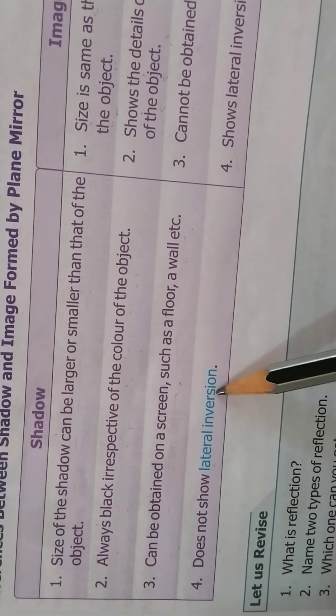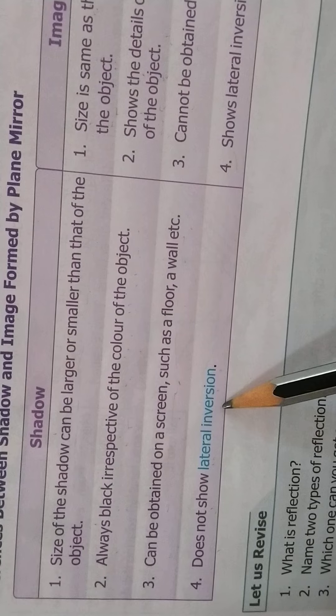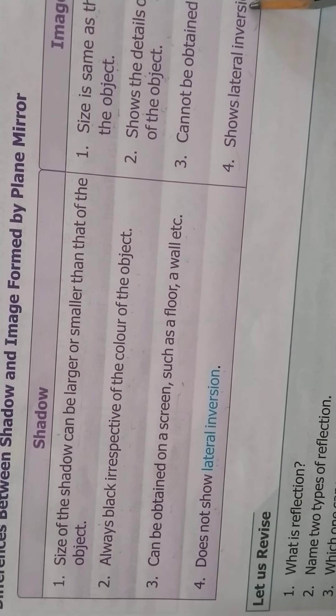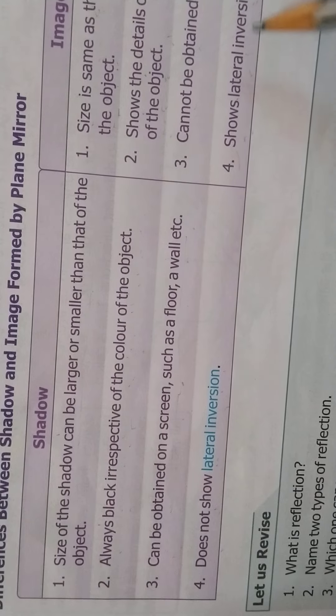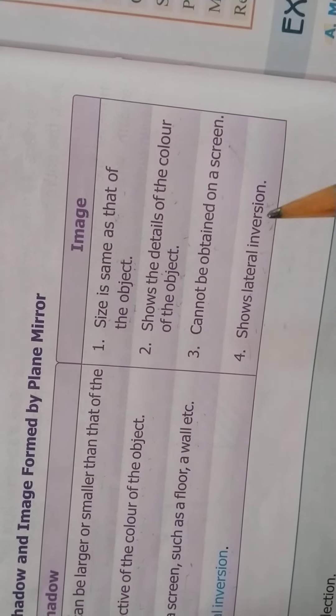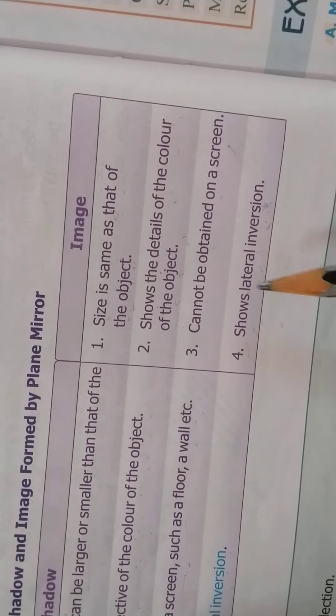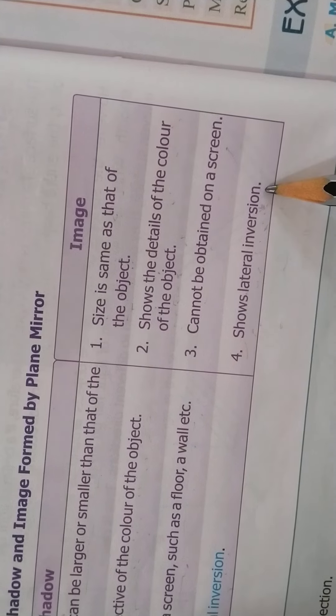Does not show lateral inversion. Shadow does not show lateral inversion. Image always shows lateral inversion. What is lateral inversion? Left side of the object appears at right side. So the image shows lateral inversion.